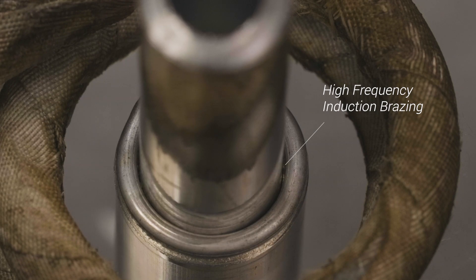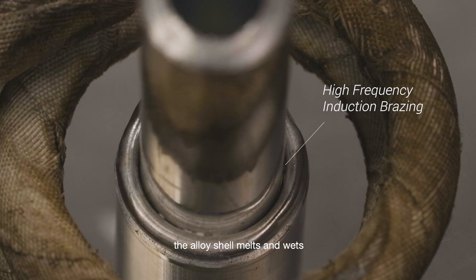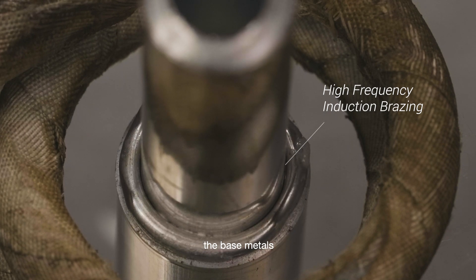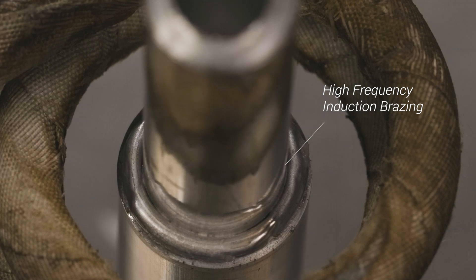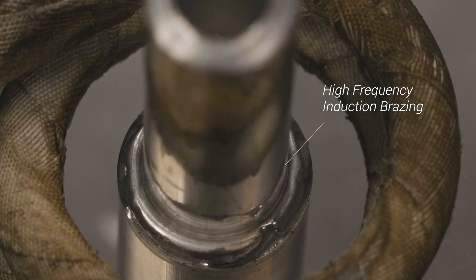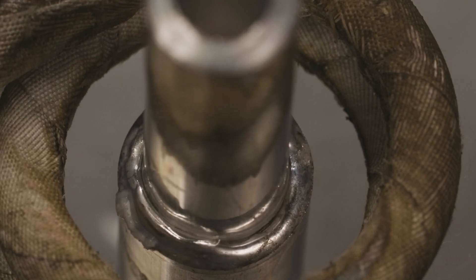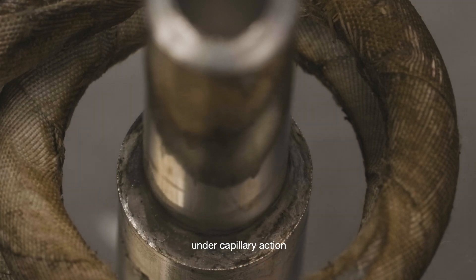Flux-core is melted by the heat. Facilitated by the molten flux and continued heating, the alloy shell melts and wets the base metals. It fills the joint, dissolves and diffuses with the base metals under capillary action.